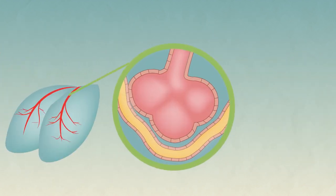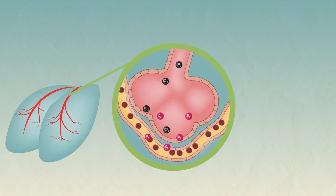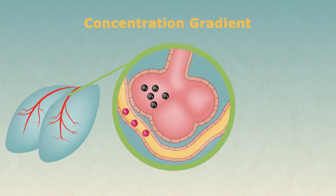The blood needs to be taken away from the exchange area quickly so that you maintain the concentration gradient between the two areas. Diffusion happens quickly when there is lots of gas in one place and not very much in the other. This is called the concentration gradient.